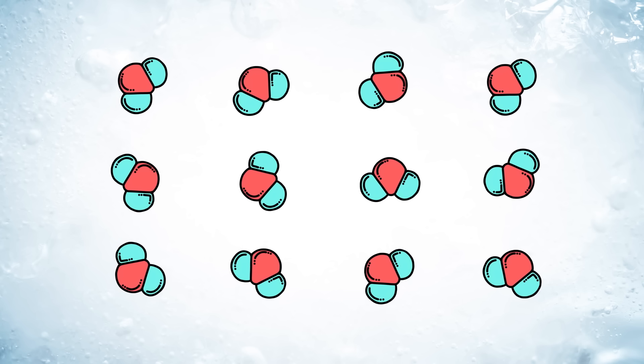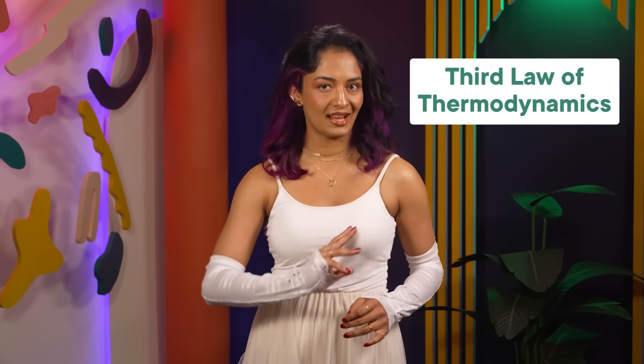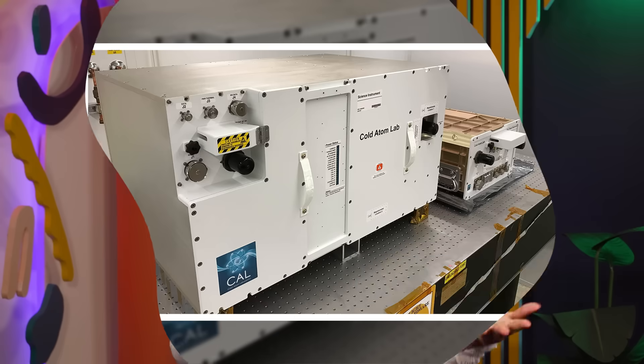So absolute zero is when there's zero energy in the system, and the particles have practically zero motion. But there's a famous law of physics called the third law of thermodynamics that says you can never actually reach absolute zero, since that would require using infinite energy. You can get as close as you like to absolute zero, but never quite reach it.